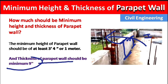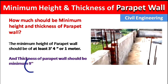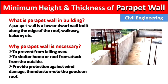The minimum thickness of the parapet wall should be nine inches. We should not provide a thickness less than nine inches, though you can provide more. So these are the minimum height and thickness of the parapet wall and the reasons why we should provide one. Please like this video and subscribe to my channel for new updates about civil engineering. Thank you.